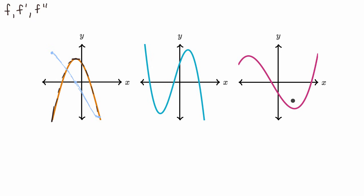But what about this magenta graph? It does look like it has the right trend. In fact, it intersects the x-axis at the right place. And over this interval, it's positive from here to here — this graph is positive when the slope of the tangent line of the orange graph is positive, and negative when the slope is negative.